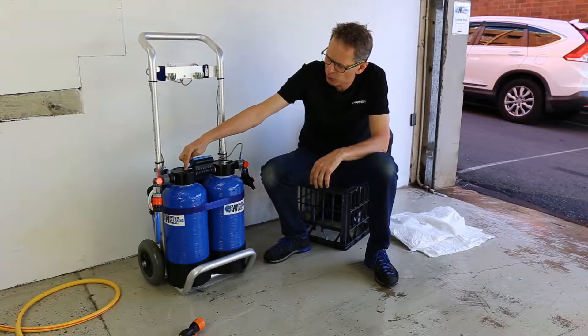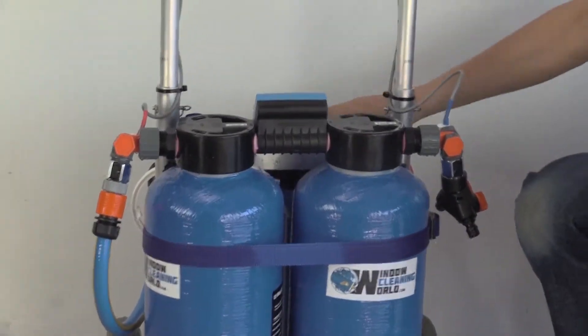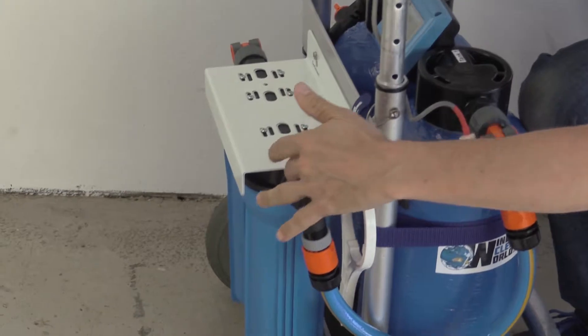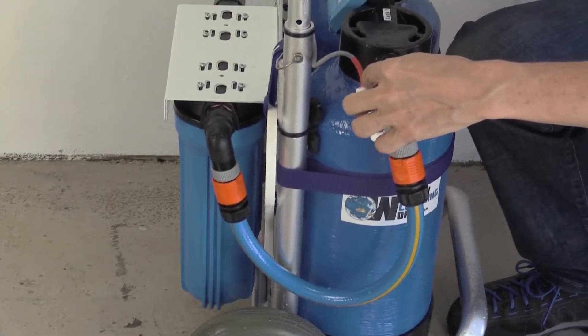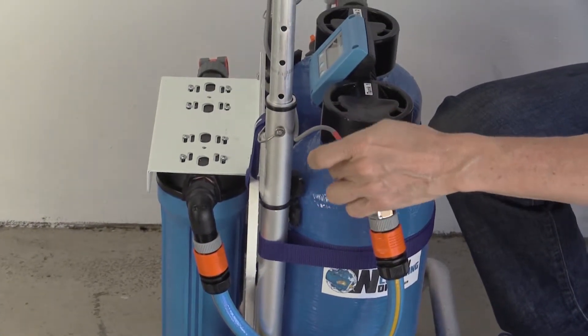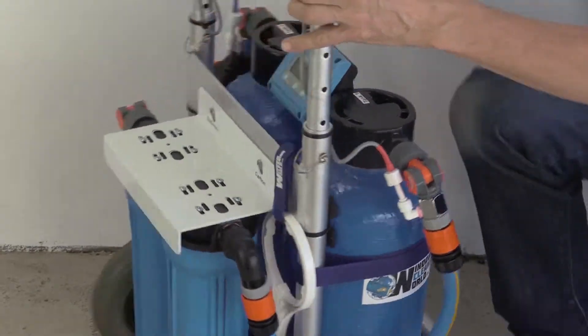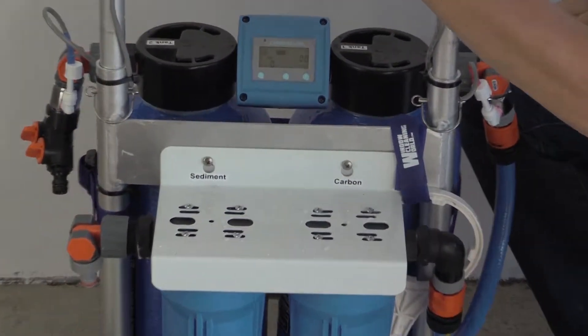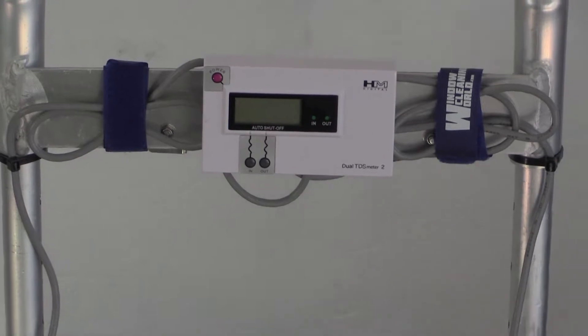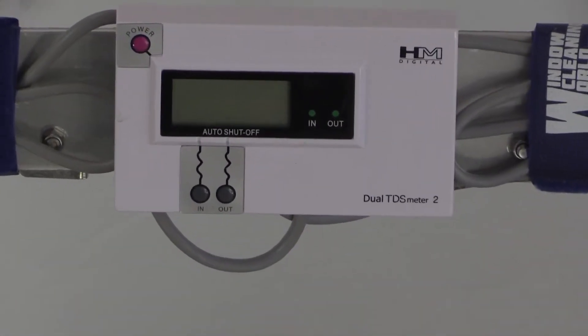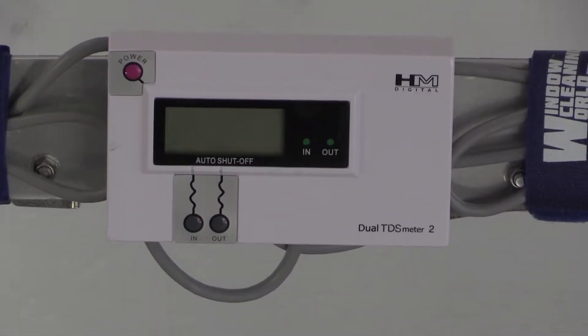Over here we've got tank 1. So the pre-filtered water that comes out of the pre-filters is measured here. After the pre-filtration we've got a little sensor here that shows the water going into the system. It's been pre-filtered but that's not going to really affect the TDS.